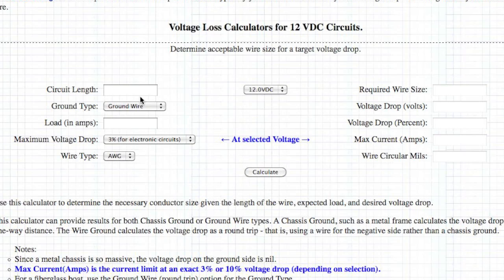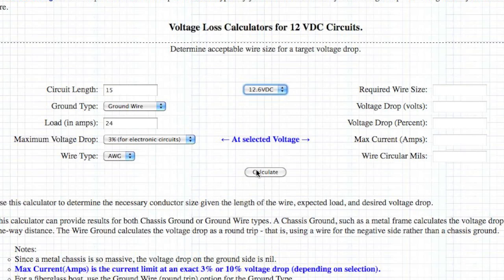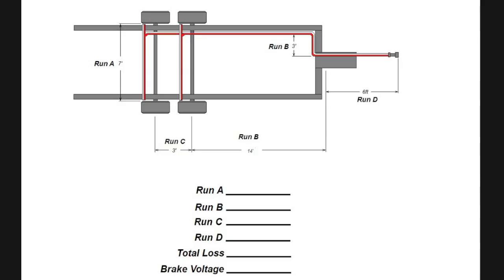So let's go back to the first calculator. Circuit length again is 15 feet, ground wire, this time 24 amps. Again, we'll go to 12.6. It says it needs 6 AWG. Now, that may seem excessive, but remember, we actually have 30 feet of circuit length in here because we're going 15 feet from the battery to the stereo, and then 15 feet back from the stereo back to the negative side of the battery.